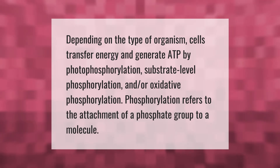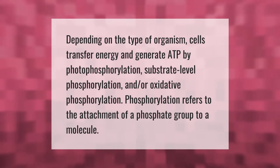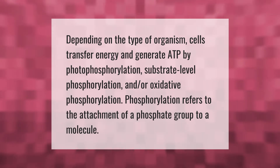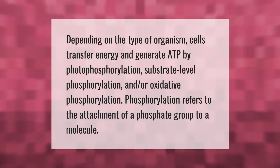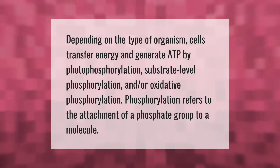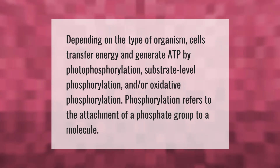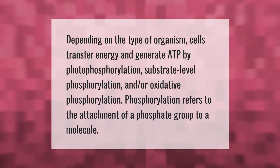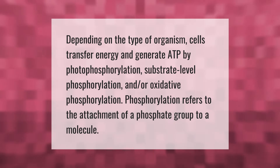Depending on the type of organism, cells transfer energy and generate ATP by photophosphorylation, substrate-level phosphorylation, and/or oxidative phosphorylation. Phosphorylation refers to the attachment of a phosphate group to a molecule.